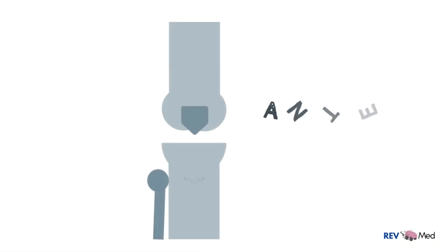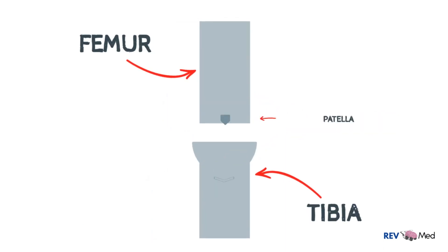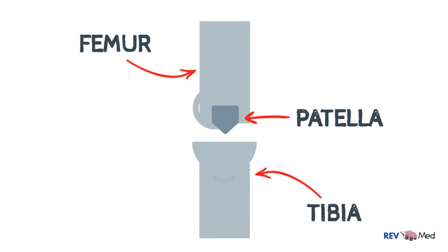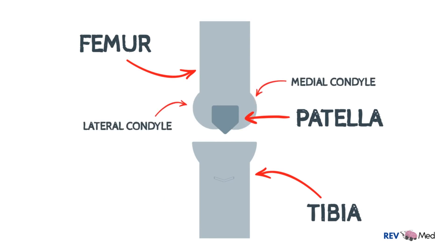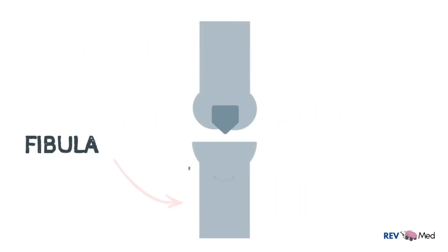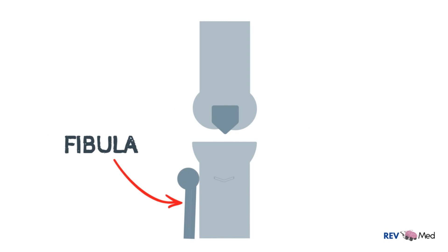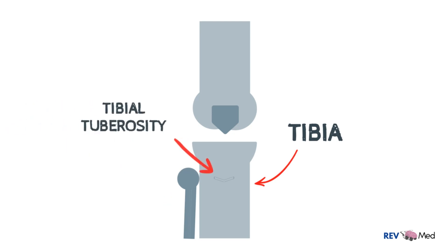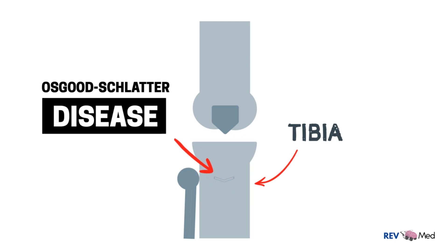Here we'll draw the anterior view of the right knee. The knee joint is made up of three bones: the femur, the tibia, and the patella. We'll draw the two side swellings of the femur, which are the lateral condyle and the medial condyle. The fibula does not make up the knee joint but does directly articulate with the tibia. The tibia has a tibial tuberosity which clinically gets inflamed and is referred to as Osgood-Schlatter disease.